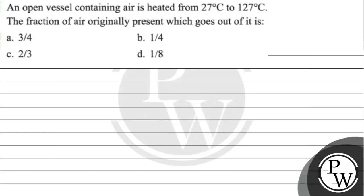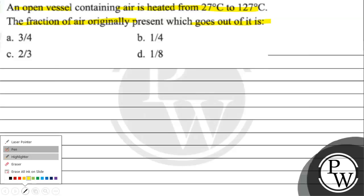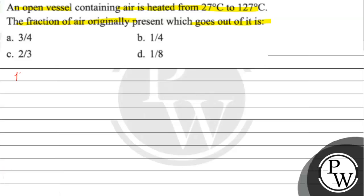Let's read this question. The question says: an open vessel containing air is heated from 27 degrees Celsius to 127 degrees Celsius. The fraction of air originally present which goes out of it is: option A, 3 by 4; option B, 1 by 4; option C, 2 by 3; option D, 1 by 8.